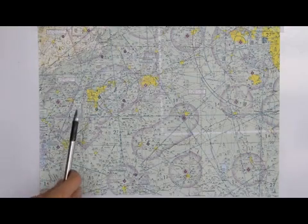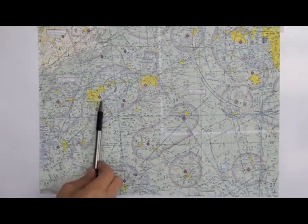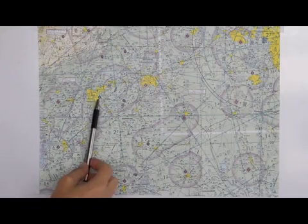Let's take a look at the local area on the sectional chart. This is the Greenville downtown airport. This is where we'll be flying in and out of.